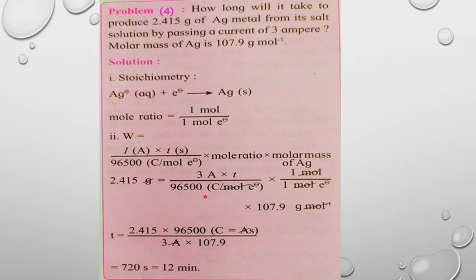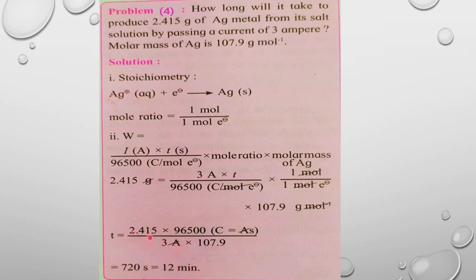Rearranging to find t: t = (2.415 × 96,500) / (3 × 107.9). Calculating this mathematically gives t = 720 seconds.